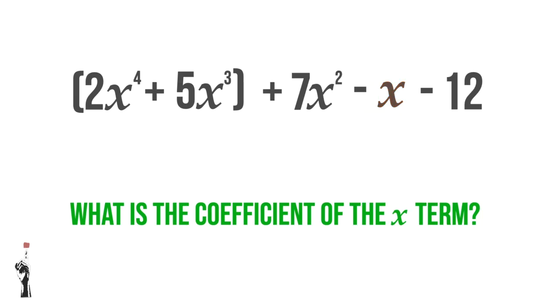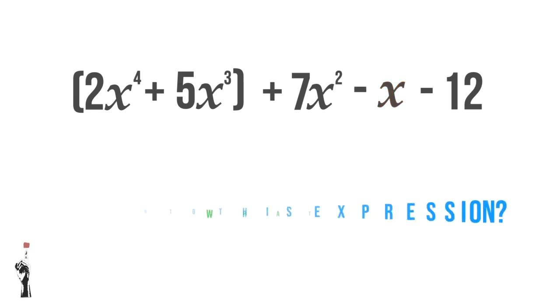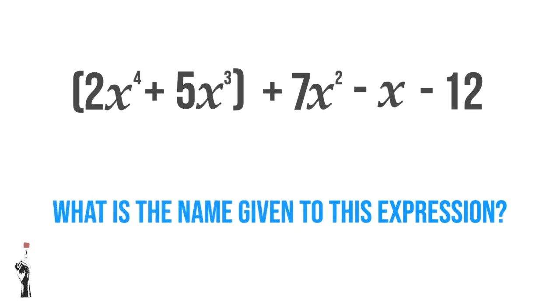But it's not just 1 — it is negative 1. Finally, what is the name given to this type of expression? We know that there are four terms, which makes this a polynomial.